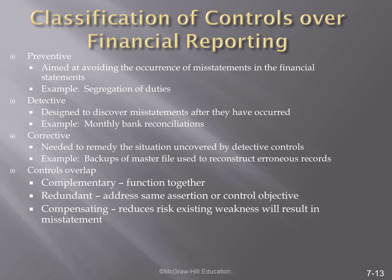Let's talk about specific types of internal controls over financial reporting. We identify three types of controls: preventive, detective, and corrective. Preventive controls are aimed at avoiding the occurrence of misstatement — for example, segregation of duties is a preventive control. Detective controls are there to identify things that have already occurred — so when we complete a monthly bank reconciliation, this is a detective control. Corrective controls are there to remedy a situation that might be uncovered by a detective control. For example, the backup of a master file might be used to reconstruct erroneous records.